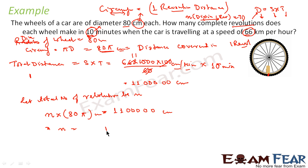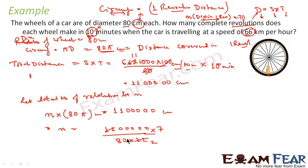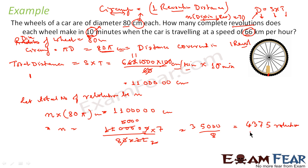So n equals 1,100,000 divided by (80 times 22/7). After canceling and simplifying — canceling the 2s and zeros — we get n equals 4375. So the car makes 4375 revolutions in 10 minutes.